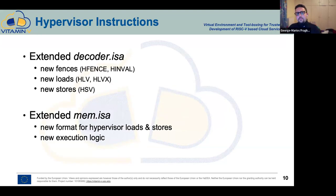For hypervisor instructions, we added them in the decoder file. We have new fences as Nick mentioned, new loads — HLV and HLVX — and new stores — HSV byte, half, word, etc. We changed the mem.isa file with a new format for hypervisor load and stores in order to support the new execution logic for two-stage translation.